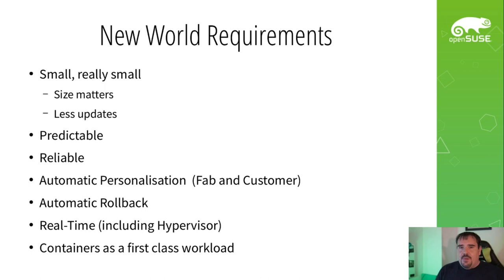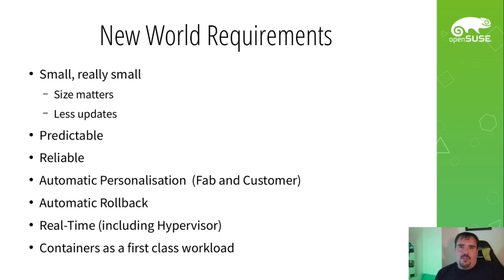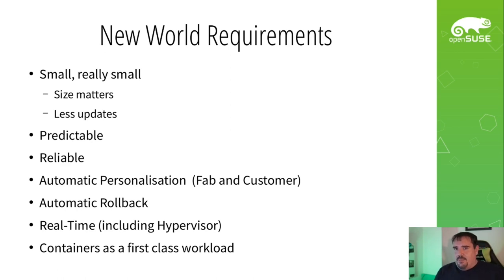Regardless of whether these machines are end user devices or running a data center, there are some pretty common requirements that run true despite these very different use cases. These operating systems need to be very small. Users don't want to micromanage these machines the same way they've been traditionally doing. The smaller the machine, the less there is to change, the less to manage, the fewer updates. There is also a very common need for a very predictable operating system — it needs to work in exactly the way it's expected to, stay that way, and not change its behavior unexpectedly. And it needs to obviously be reliable. All of these requirements are talking very much about appliances or single-purpose machines. Having automatic personalizations makes it easy for different schools, companies, or manufacturers embedding this into their devices to personalize it specifically for their use case.